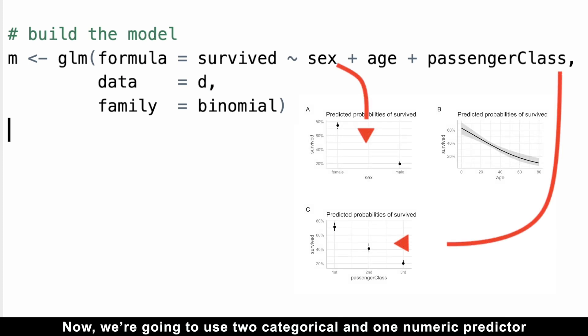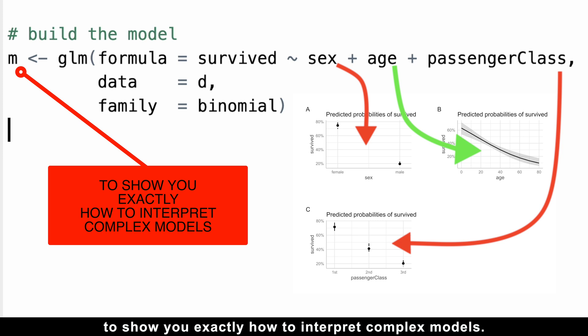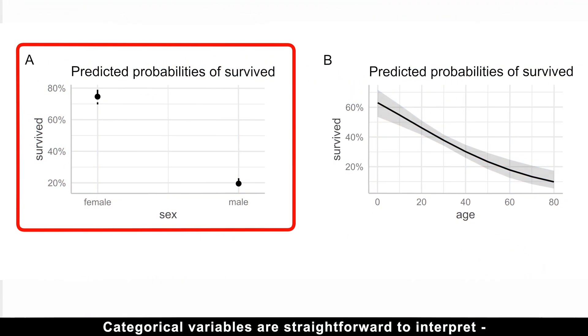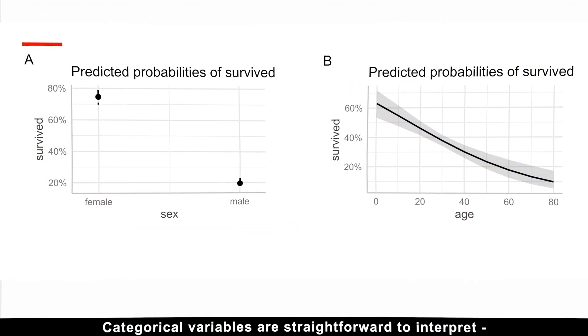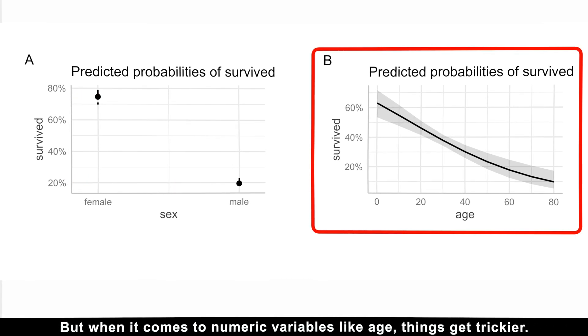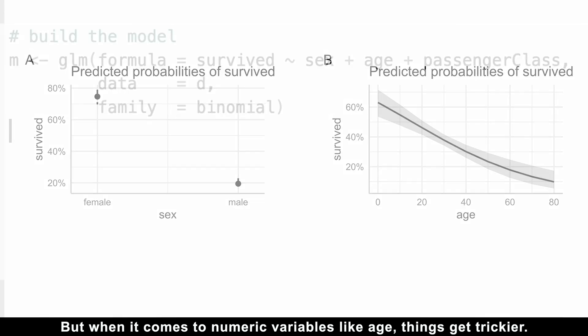Now, we're going to use two categorical and one numeric predictor to show you exactly how to interpret complex models. Categorical variables are straightforward to interpret. Each category gives a clear survival probability. But when it comes to numeric variables, like age, things get trickier.